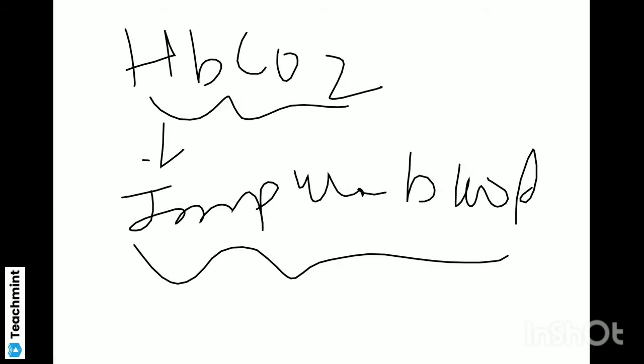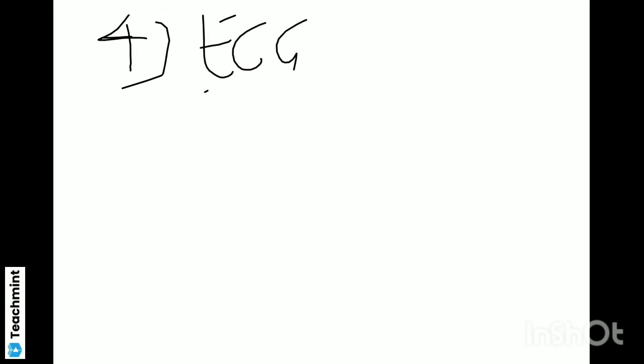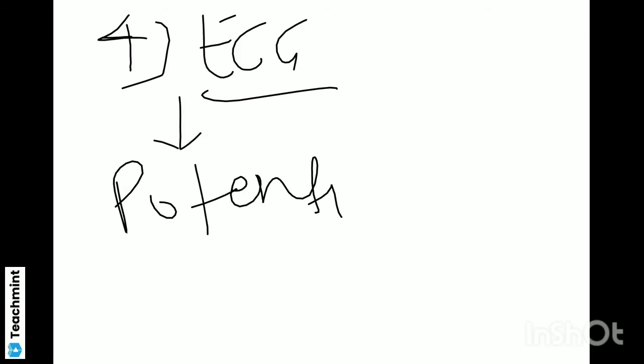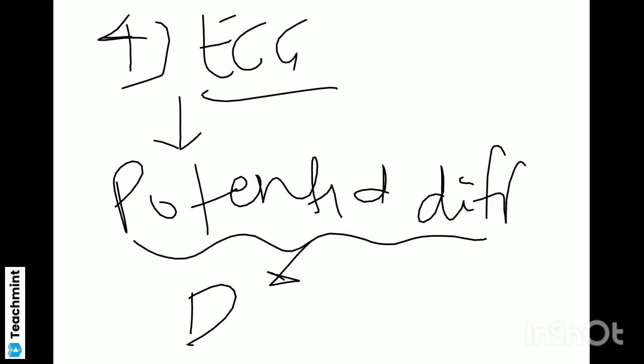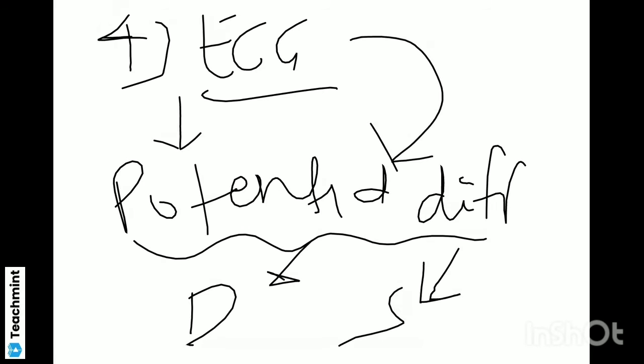Question number four: ECG is a machine. Electrocardiogram is a machine to record the diastolic or systolic moment of heartbeat. ECG records the potential difference. Potential difference basically ye kya karta hai — record karta hai. So ye potential difference jo hota hai, vo diastole aur systole ki rhythm ya contraction mein depend karta hai. ECG records the potential difference — remember this point.